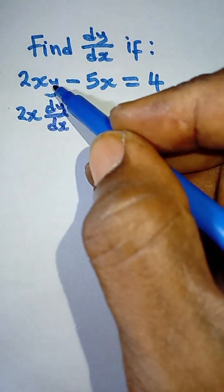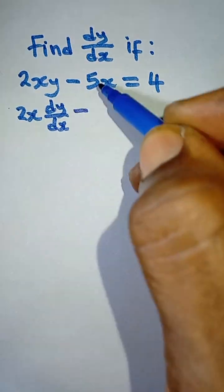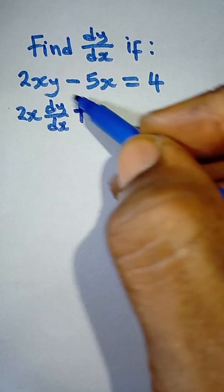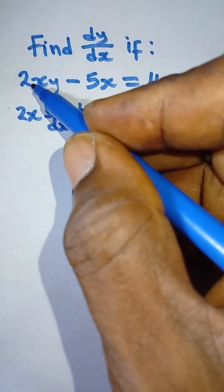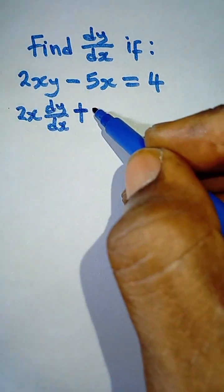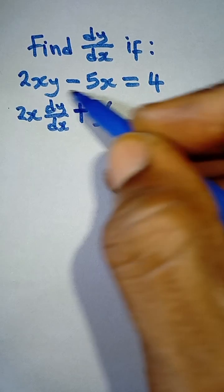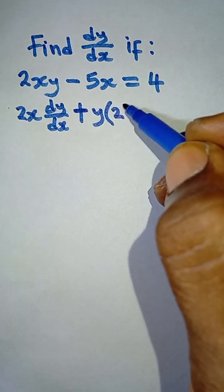Then plus y multiplied by the derivative of 2x. So y multiplied by the derivative of 2x is 2. The derivative of 2x is 2.